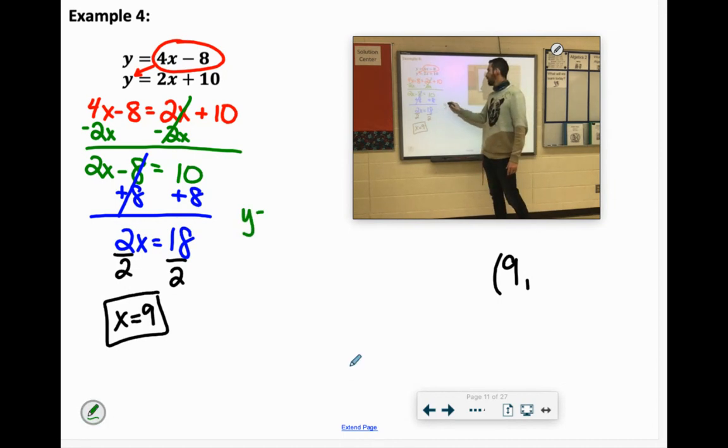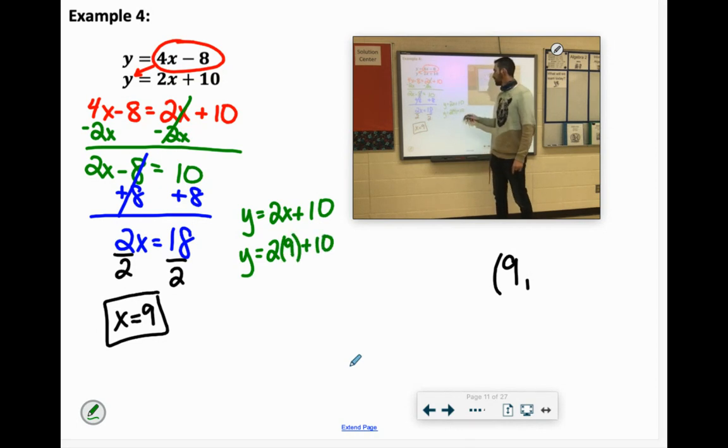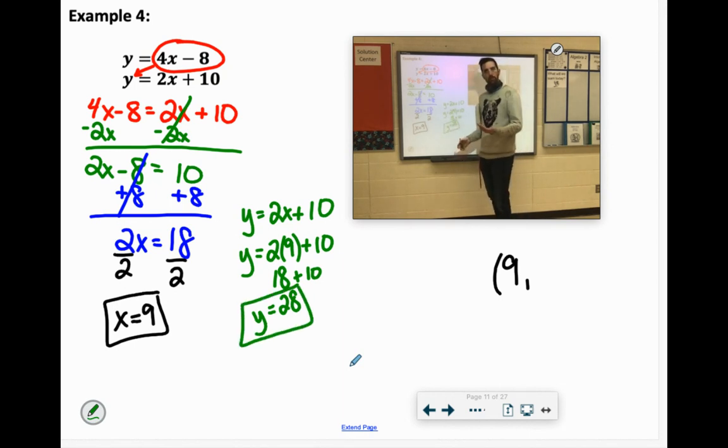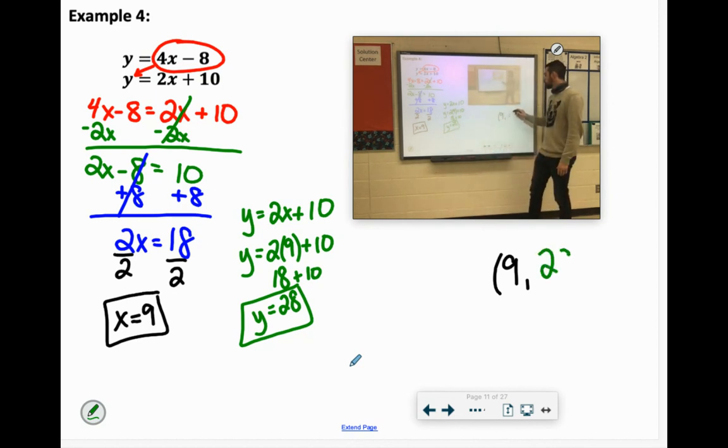So if we use that, y equals 2x plus 10. We know that x is 9. We just figured that out. So 2 times 9 is 18, plus 10 is 28. So our y-coordinate is 28. All the graphs we were working on yesterday just went up to 10, so it would be a pain to graph it if it was that high. That's where this is so nice.